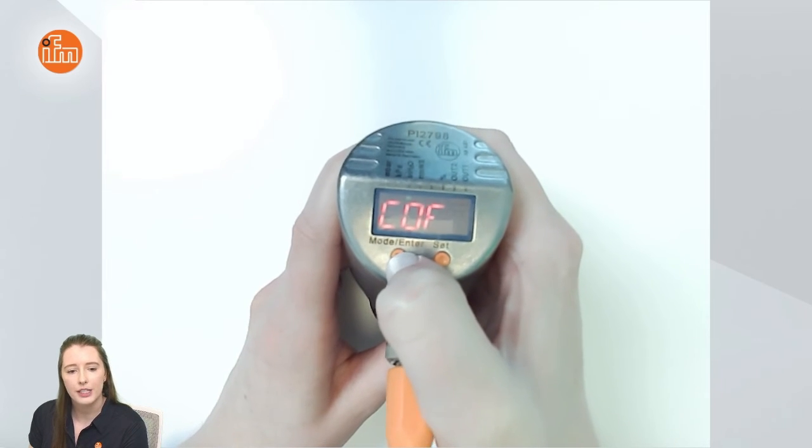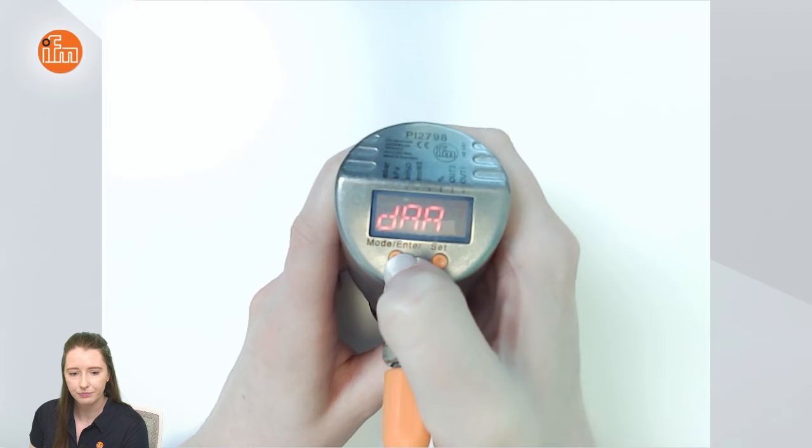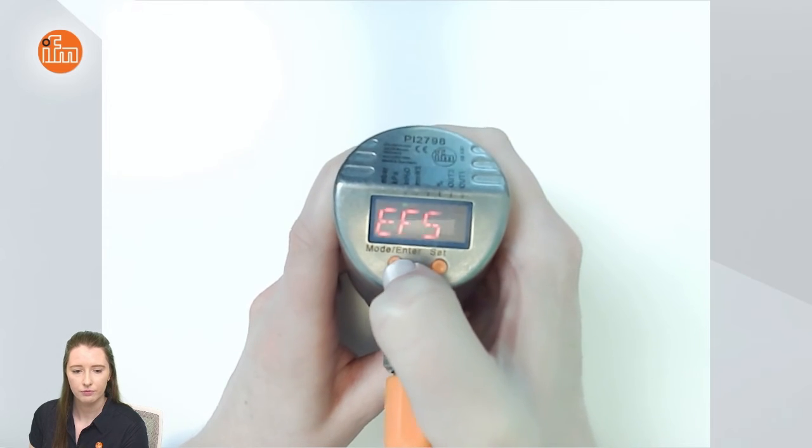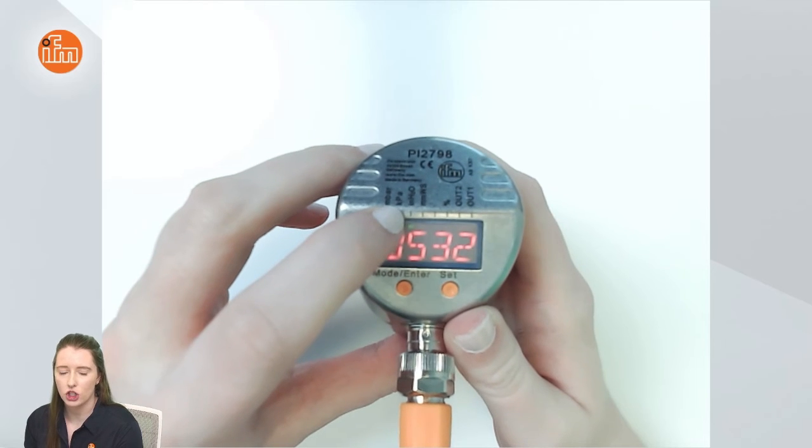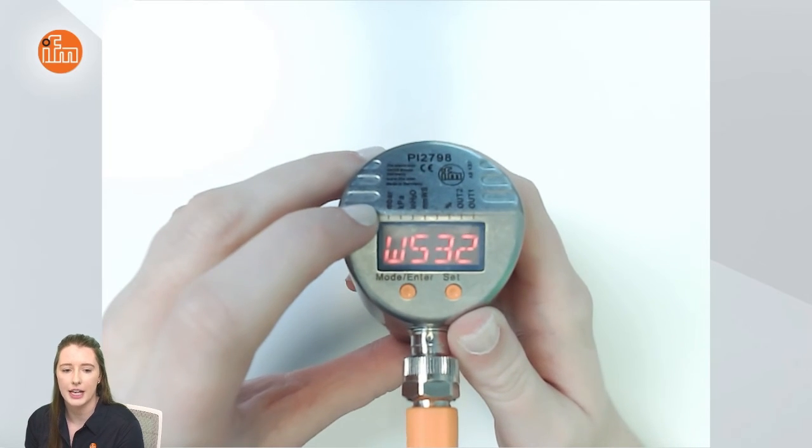So now if I press mode enter until I am out of the display you will now see that the LED indication is on inches of water column instead of millibar.